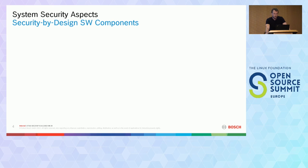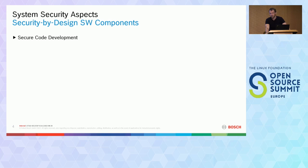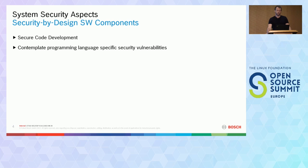We also have our software components and they should be secure as well. We need secure code development — developers who have a security mindset and good coding practices. On top of that we can have static analysis tools, code reviews, etc. We can look at the programming language we're using — whether we use Rust or C/C++ makes a big difference.